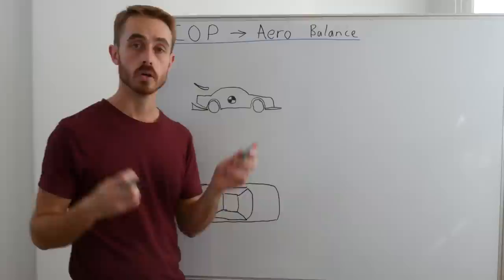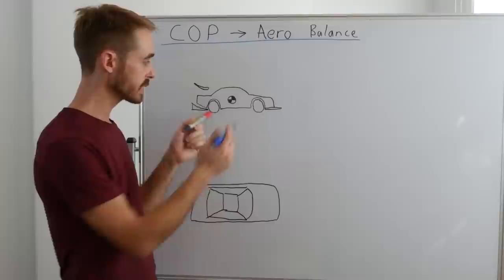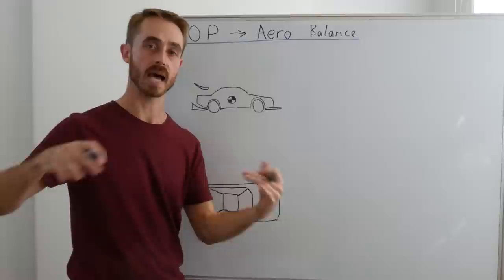So what is the center of pressure? Well, it's a relatively simple concept. Basically, we have a whole bunch of different aerodynamic devices on our car. Let's say we've got a front splitter, rear wing, rear diffuser. They all provide downforce across the car.